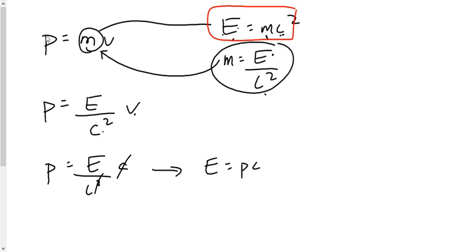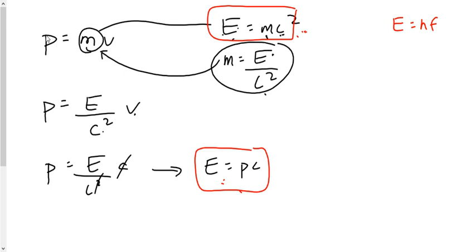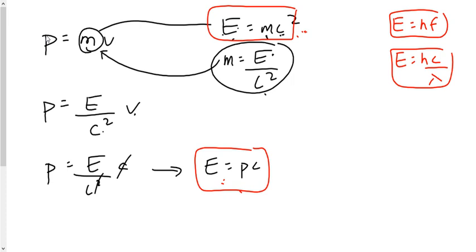This equation will appear along with E equals mc squared in the top right-hand corner of your data sheet. Open up your data sheet — you'll see E equals mc squared equals p times c. That's Einstein's energy-mass equivalence and the energy of a photon. Don't forget, this is the energy of a photon related to mass. We already know the energy of a photon related to frequency, and related to wavelength. Now we have a brand new equation describing the energy of a photon related to its momentum.